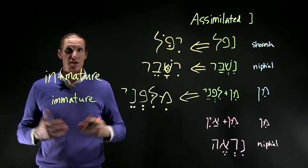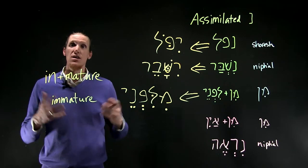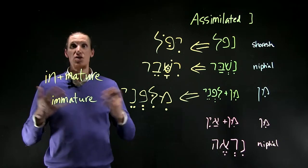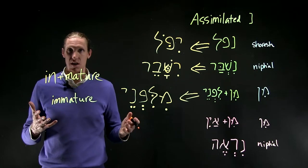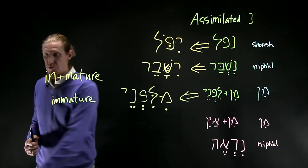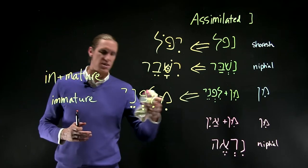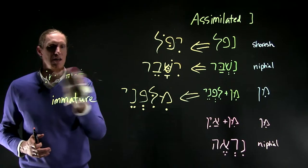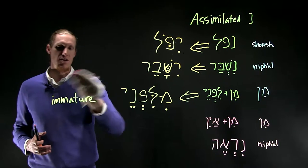Same with illegal or illogical or immigration. Any of these words, it works the same way in English, that the n becomes the next letter, just like the noon does in Hebrew. It becomes the next letter when it assimilates.